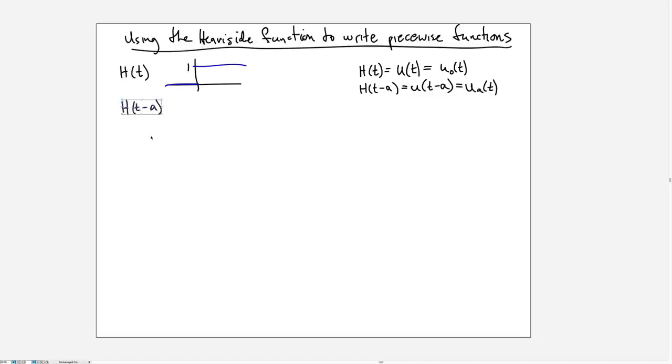As a first example let's look at the Heaviside function when you change the argument from t to t minus a. As you might expect, you have the jump now occurring at a. It'll be 0 before it reaches a and then jumping up to 1 at a.